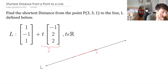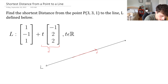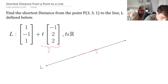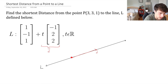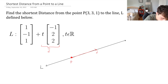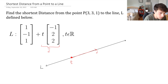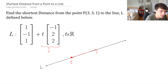To check this, plug in t equals 0 and you can see that the point (1, -1, 1) would be on the line. So let's draw an arbitrary point on this line and label that as P0. Remember, that's a point, not a vector. And then we've got direction vector D.